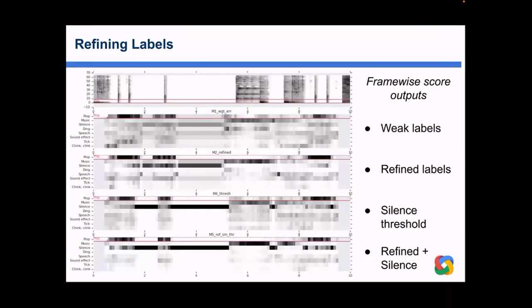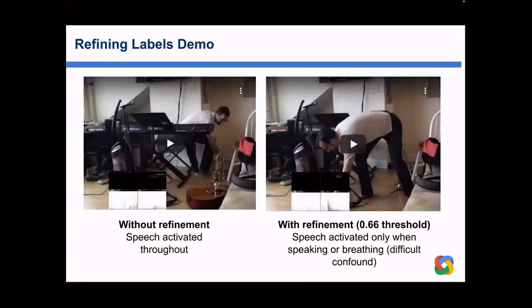Looking at classifiers trained with different versions of these labels: even with weak labels we got very good discrimination. For the 'plop' sound you can see little vertical stripes where the sound effect occurs, and even trained on weak labels we get reasonably good localization. When we refined those labels the other classes get removed — a few examples of silence being labeled as another class get cleaned up — and when we add the silence threshold we get even better discrimination because silent regions are now clearly labeled as silence.